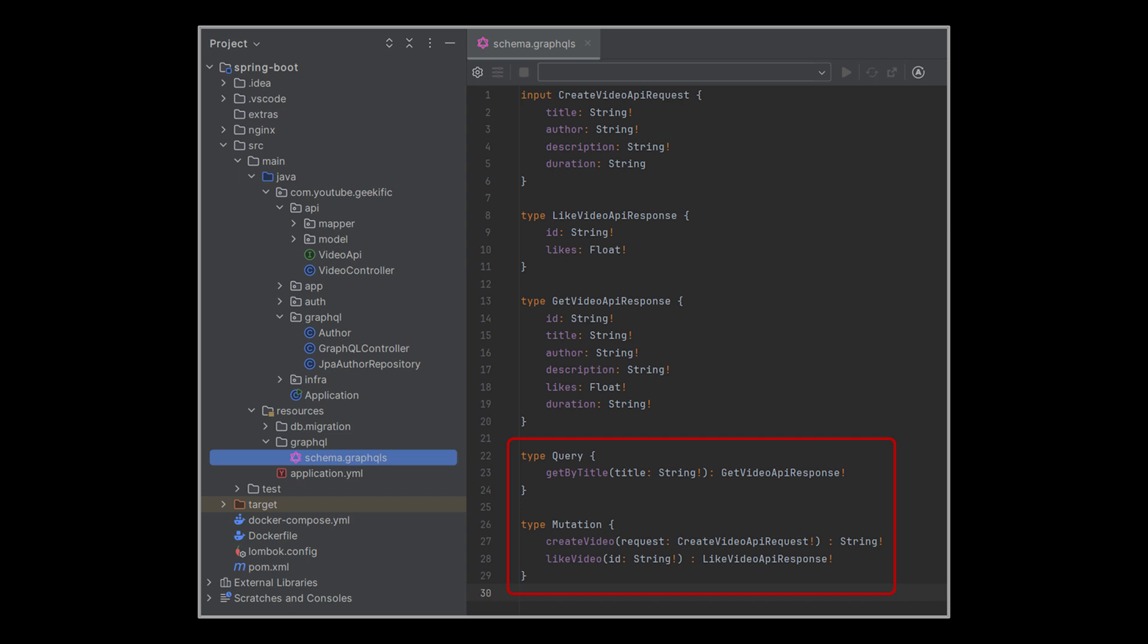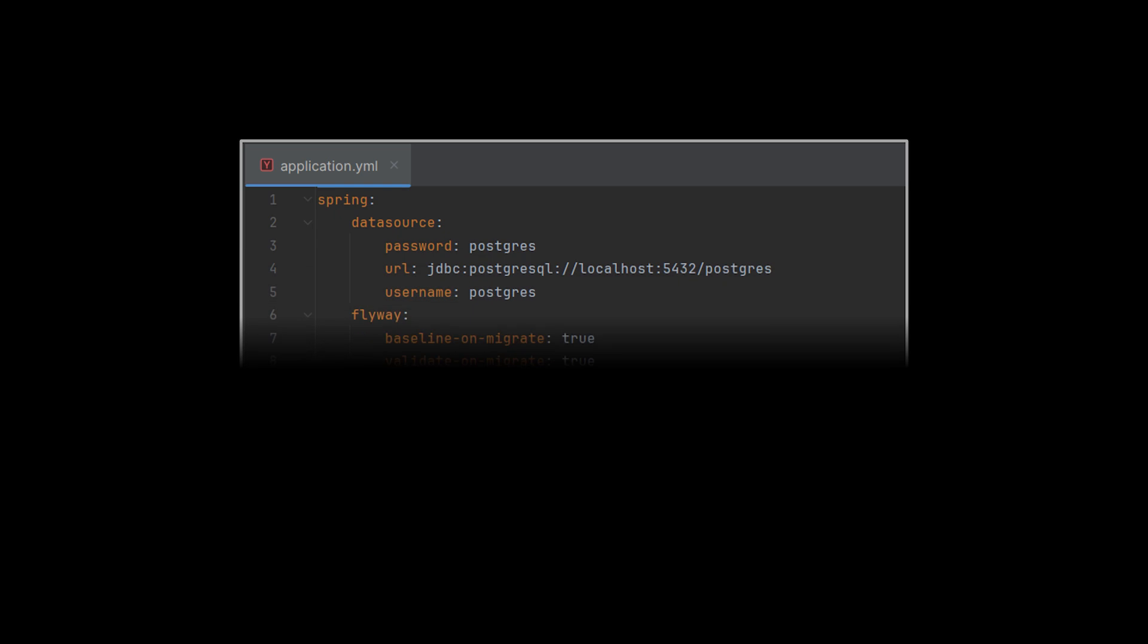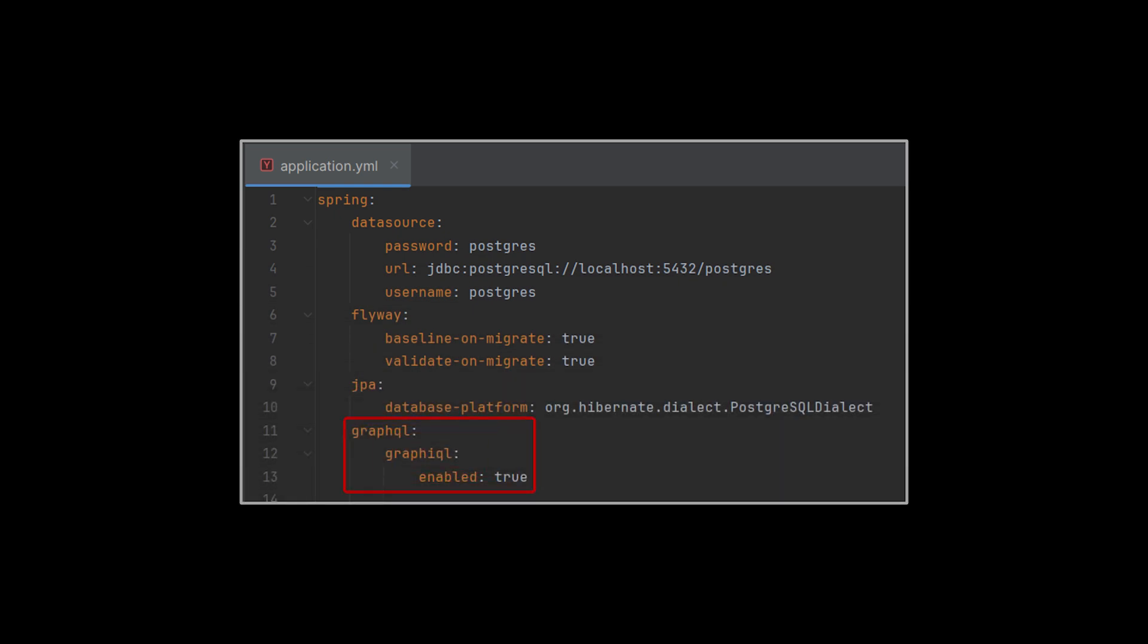Additionally, we will define the endpoints themselves under the corresponding category. In the query section we will put the GET operations, and in the mutation section we will put the POST and PUT endpoints.